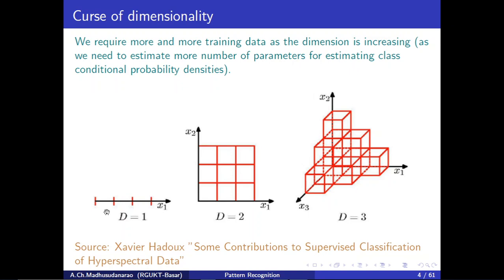If there are two classes, for the class 1 likelihood function we need to estimate three parameters using class 1 training samples, and for the class 2 likelihood function we need to estimate three more parameters using class 2 samples. So for each class we need to estimate three parameters when d=1.